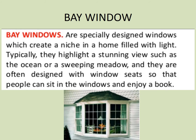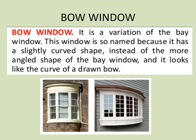Next we have the bay window — specifically designed to create a niche in the home filled with light. They typically highlight a stunning view such as an ocean or a sweeping meadow, and are often designed with window seats so people can sit and enjoy a book or the view outside. They have a trifold look about them. Then we have the bow window, which is a variation of the bay window but with a slightly more curved shape. Think of it this way: the O in bow is curved, while the A in bay is angular — and it also resembles the curve of a drawn bow.